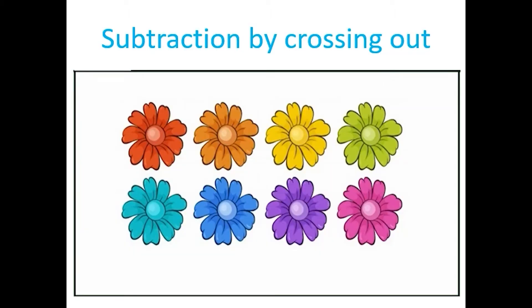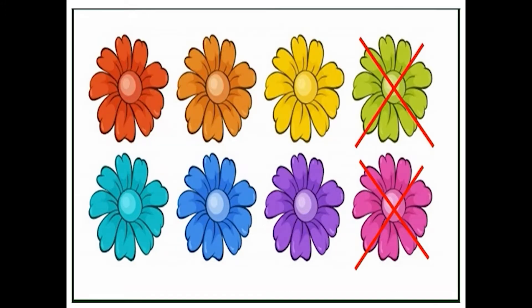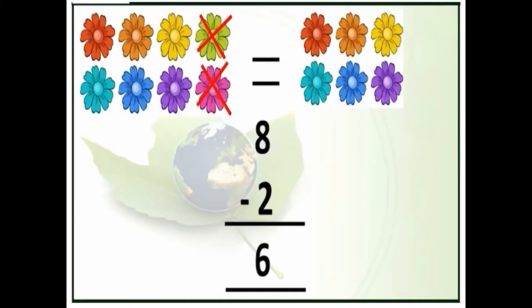Now let us see some examples. Here we have eight flowers. If I take away two flowers, then how many flowers are left? Yes, six flowers are left. For eight flowers we have to write eight here. We cross out two flowers, and write two just below the number eight. Children, don't forget to write the minus sign. If we subtract two from eight, the answer will be six. So eight minus two is equal to six.